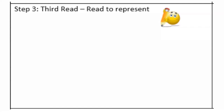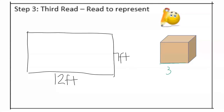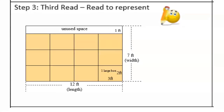We can represent the base of the truck bed using a rectangle that is 12 feet in length by 7 feet wide. We also know that the base of the large box has dimensions of 3 feet by 2 feet. We need to think about how many of the 3-feet-by-2-feet bases can fit in the base of the truck. Here is a detailed representation of the base of the truck bed filled with large boxes. We can see that this representation shows the length of the truck bed at 12 feet, the width of the truck bed at 7 feet, and the dimensions of the base of the large box at 3 feet by 2 feet.